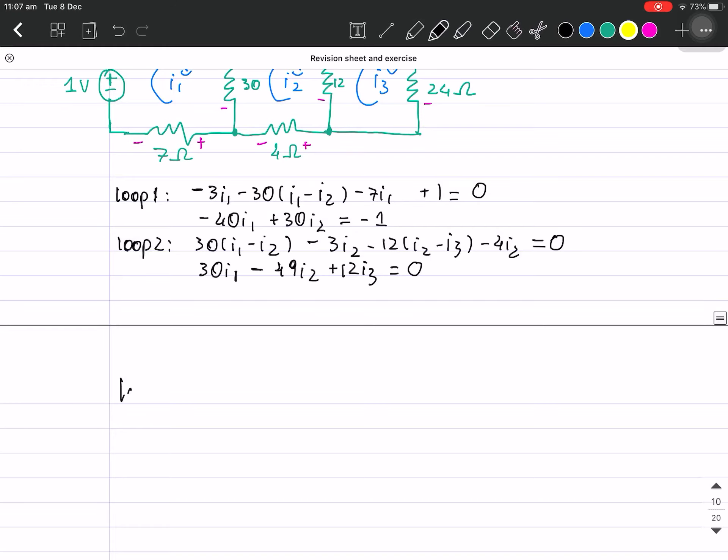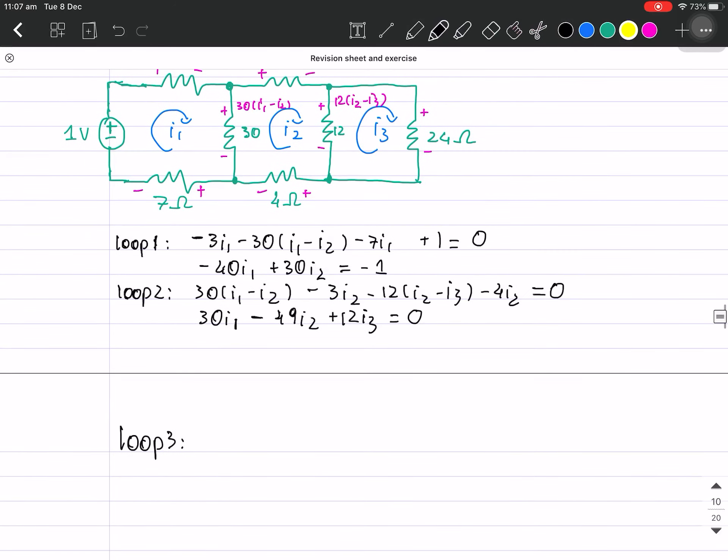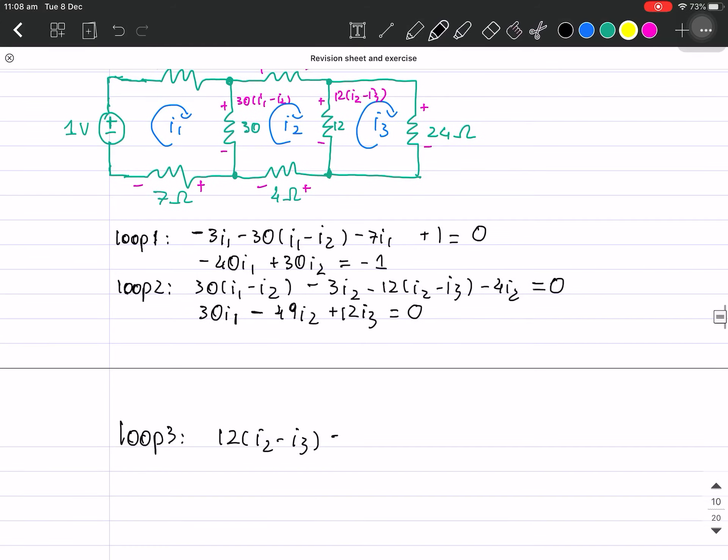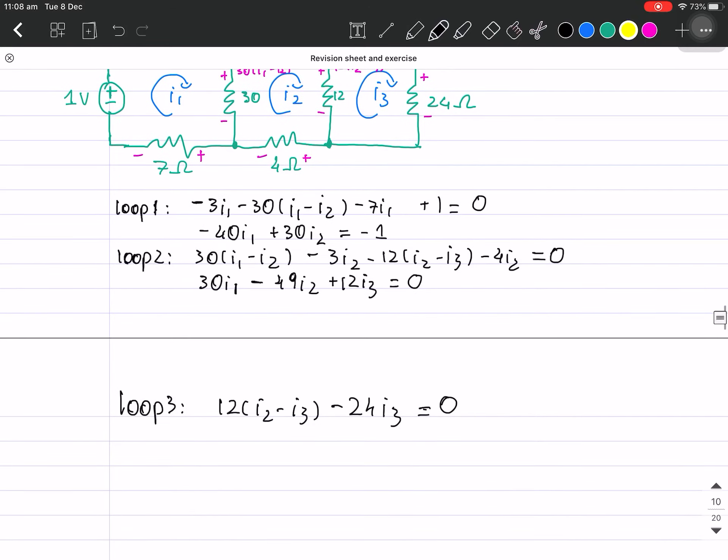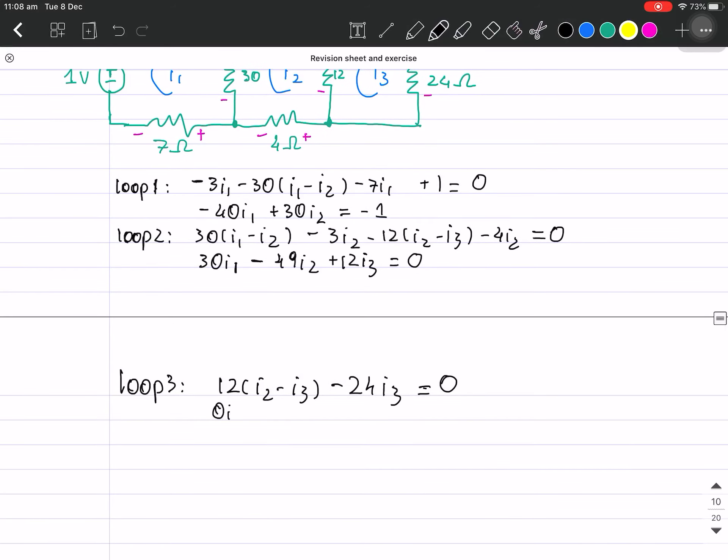My Loop 3 is 12(i2 - i3) minus 24i3. That should give me 0i1 plus 12i2 and negative 36i3.